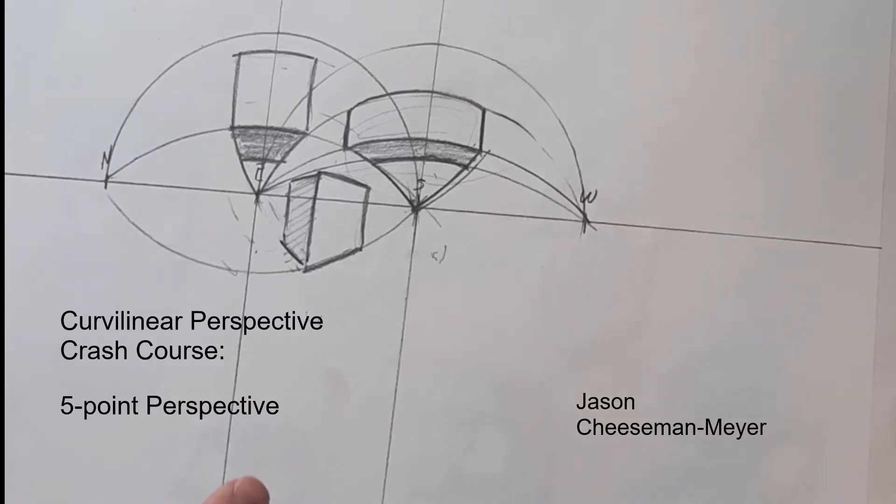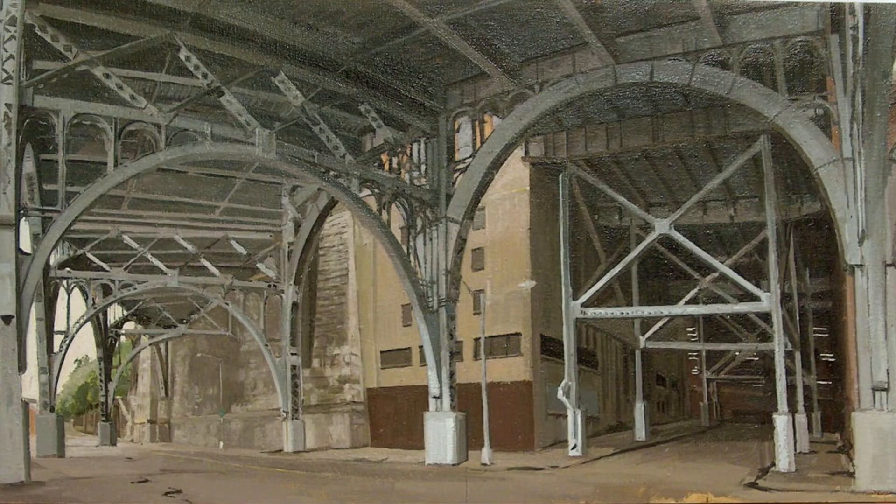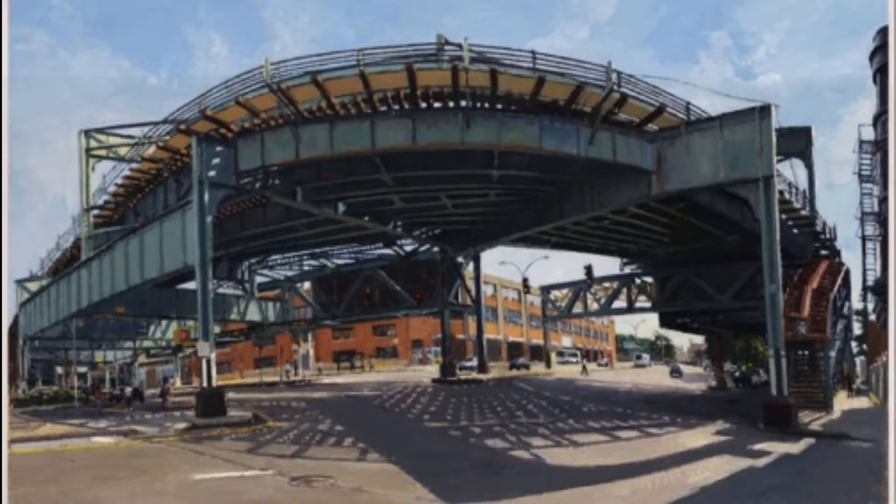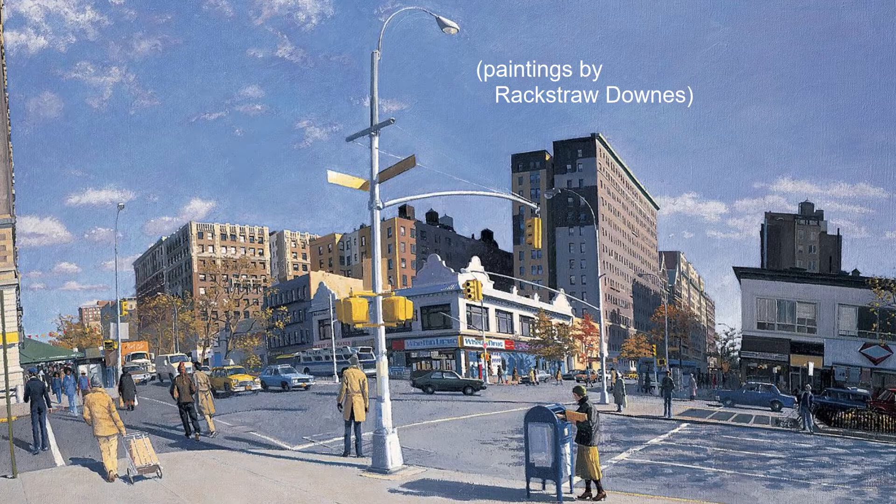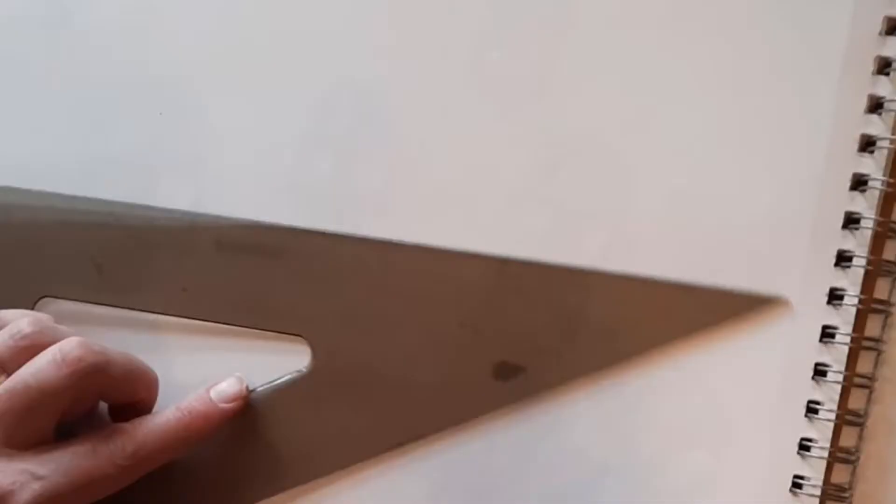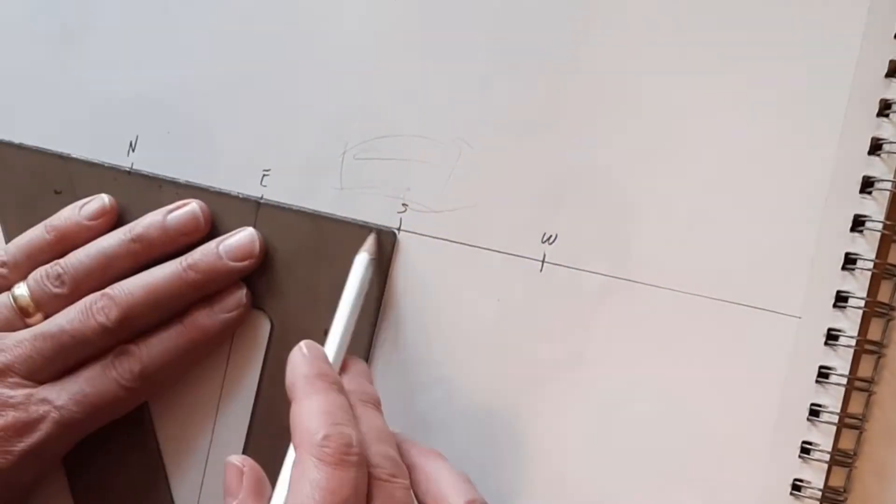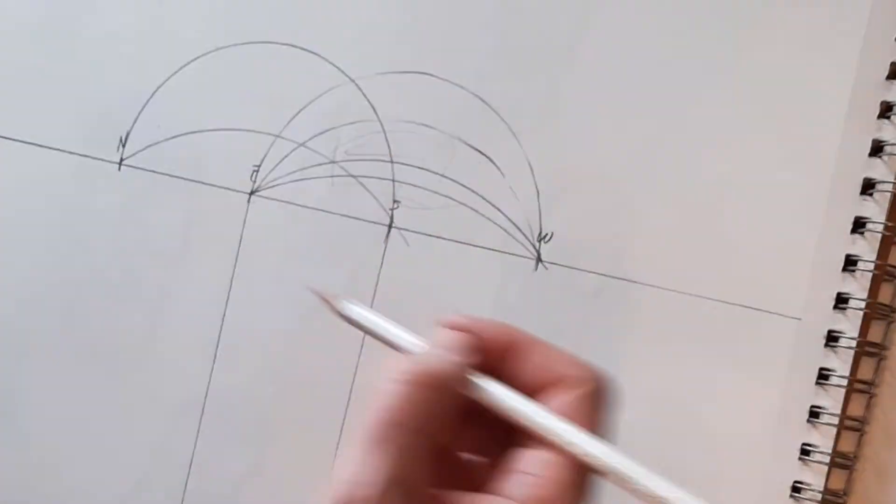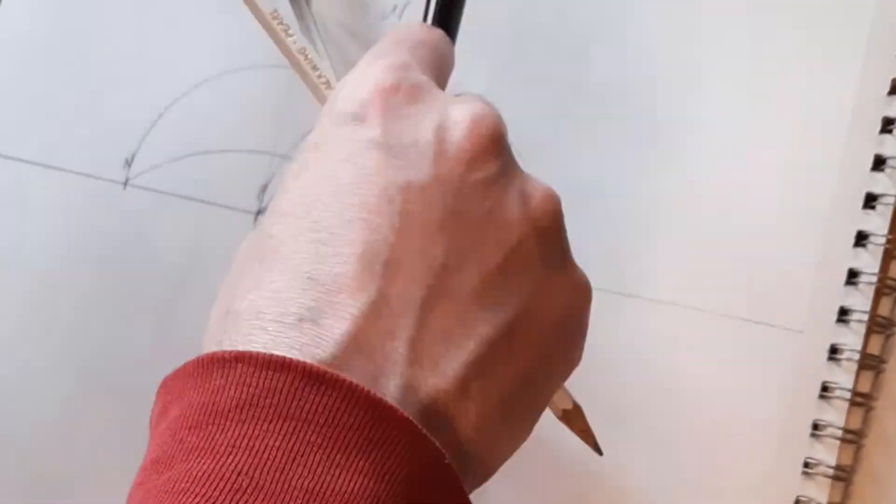So a while ago, a friend of mine asked me about some painting by Rackstraw Downs. How did he do that? How do you do that weird, curving, open-up space that he's depicting? And I did this quick run-through on drawing in what I call four-point perspective.